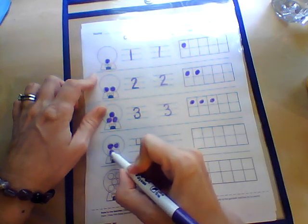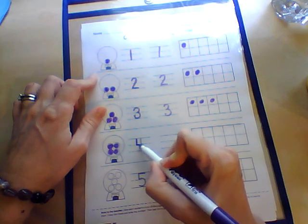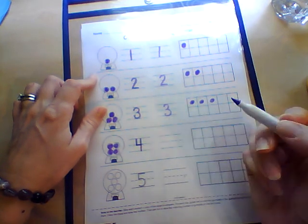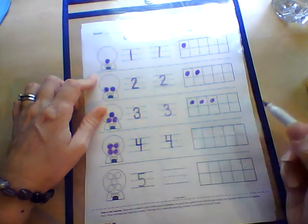Fill it in, fill it in, fill it in. To make a four, we go down halfway, over halfway, down all the way. We say it out loud as we're making it: down halfway, over halfway, down all the way.